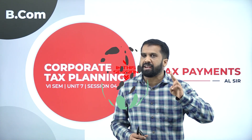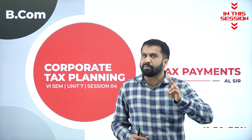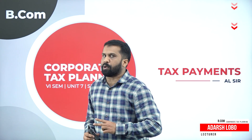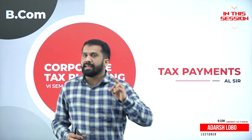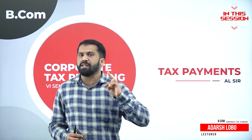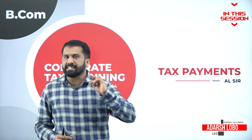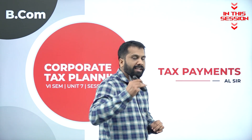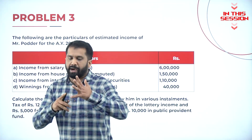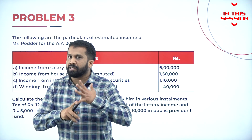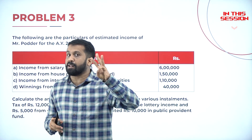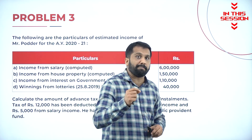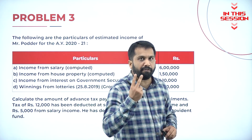Two members cannot pay advance tax. The first person is age above 60, and the second person whose taxable limit is less than two lakh fifty thousand. For lottery income, there is a separate calculation of 30 percent. If it is a long-term capital gain, there is a separate calculation of 20 percent.